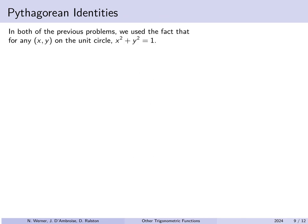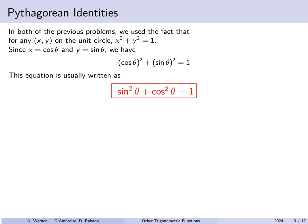In both of the previous problems, we repeatedly used the Pythagorean theorem. Specifically, for any point on the unit circle, x² + y² = 1. Since cosine of theta equals x and sine of theta equals y, we can substitute to get cos²θ + sin²θ = 1. This is usually written with sine first: sin²θ + cos²θ = 1. Note that sin²θ means (sin θ)² — not some new function — this is just common notation. So we say aloud: sine squared theta plus cos squared theta equals 1.